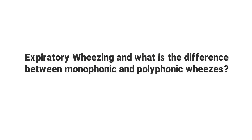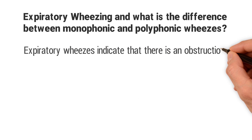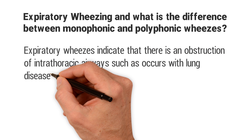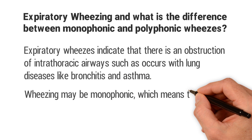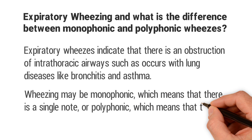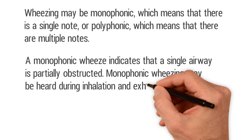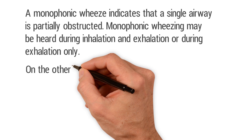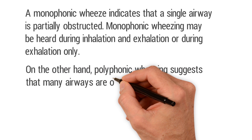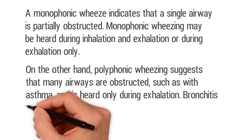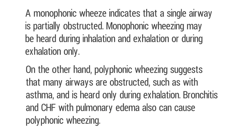Expiratory wheezes indicate obstruction of intrathoracic airways, as seen in lung diseases like bronchitis and asthma. Wheezing may be monophonic — meaning a single note, indicating a single airway is partially obstructed — and can be heard during inhalation and exhalation or exhalation only. Polyphonic wheezing means multiple notes, suggesting many airways are obstructed, and is often seen in asthma. Polyphonic wheezing is only heard during exhalation. Other conditions causing polyphonic wheezing include bronchitis, congestive heart failure, and pulmonary edema.